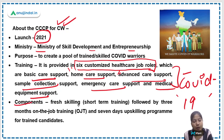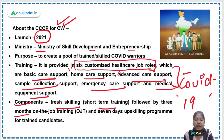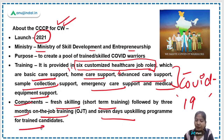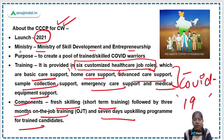The two components of this program are: first, fresh skilling through short-term training followed by three months of on-the-job training; and second, a seven-day upskilling program for already-trained candidates.